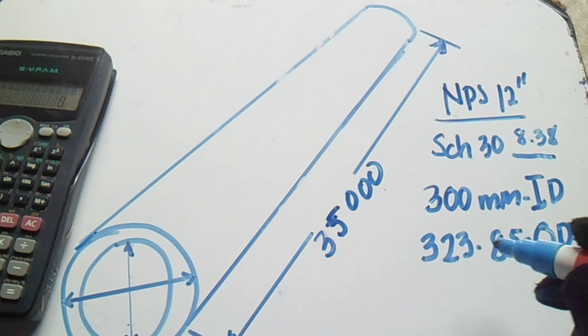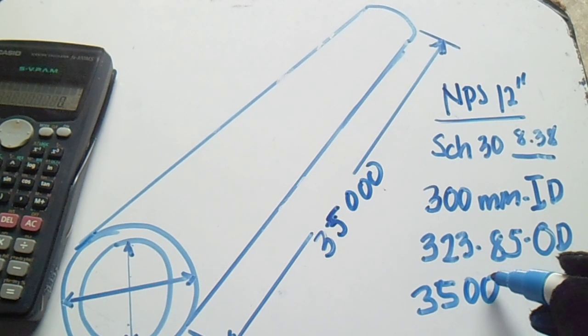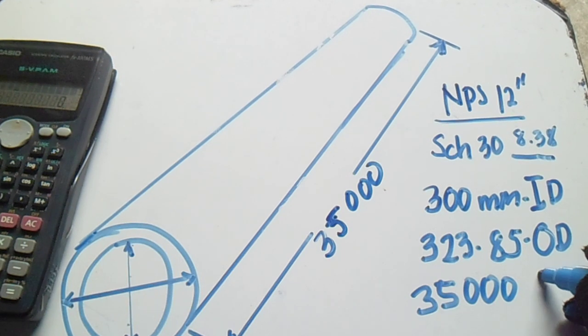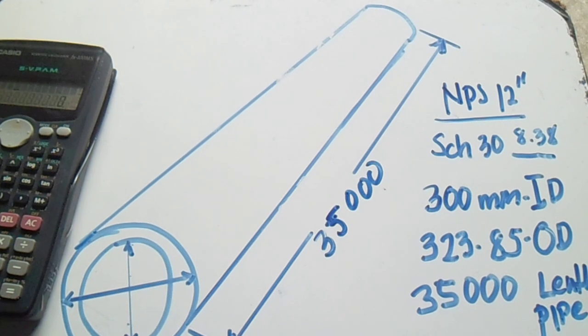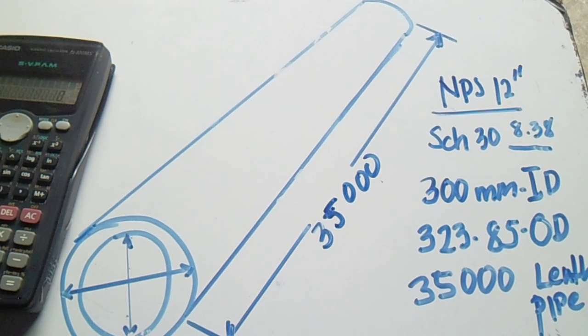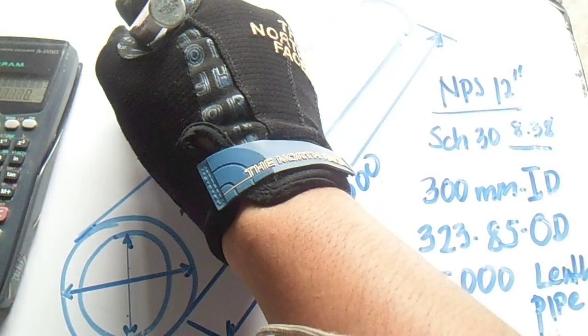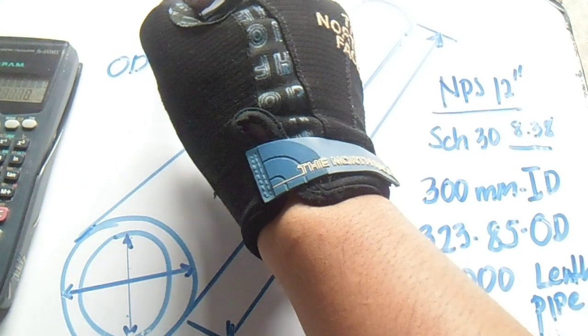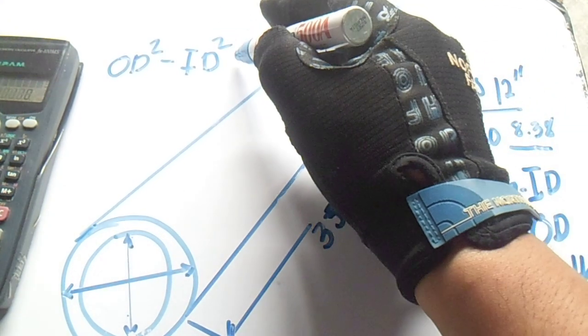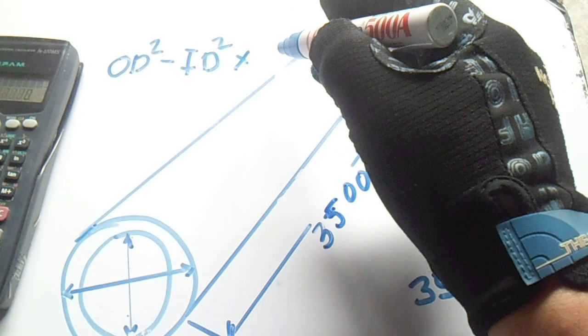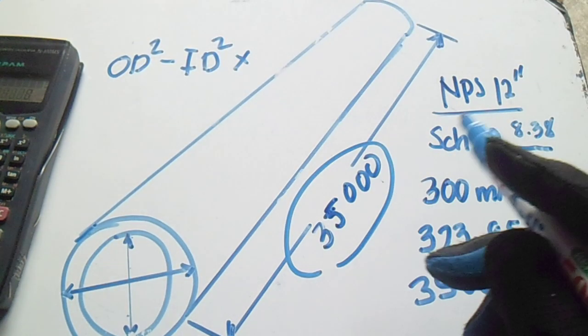The length of pipe is 35,000. The formula for that: we have outside diameter squared minus inside diameter squared, multiply it to length, and we have a constant.